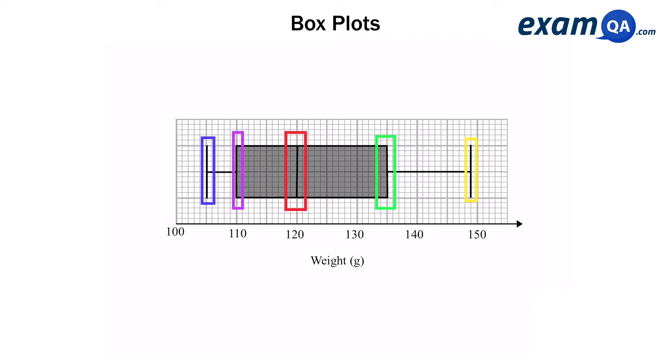And there's five key lines and we have a scale at the bottom. In this example we've got weights. So your scale could be different depending on your example.